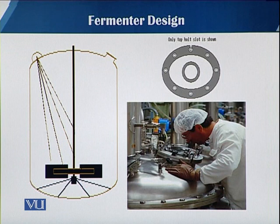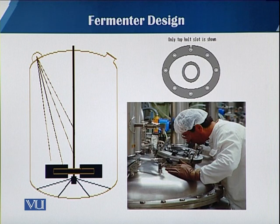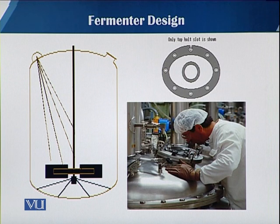Apart from baffles and other systems, in an industrial scale fermenter when the body is made up of stainless steel, there should be a provision to observe inside the fermenter. In very large fermenters there are small glass openings — we can call them screens or small windows — by which we can observe the process inside. Some fermenters have assemblies with a light, so when we switch on the light we can see inside the fermenter.